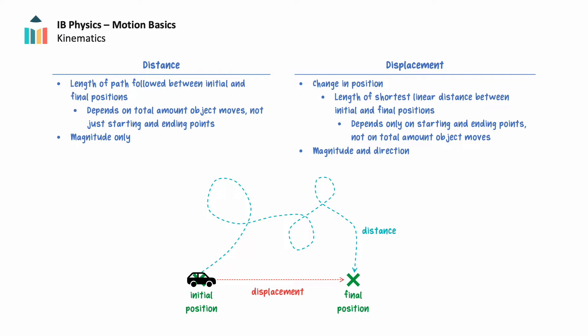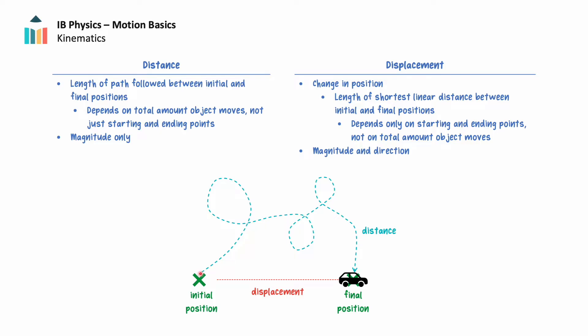For a single movement or journey, an object's distance and displacement may have the same magnitude, or the magnitude of the distance the object travels may be greater than the magnitude of its displacement. For example, a car leaves a starting position and travels a winding path to its ending position. The distance traveled is the length of the entire path traveled by the car, while the displacement is the length of the straight line connecting the car's initial and final positions.